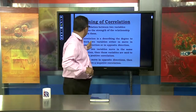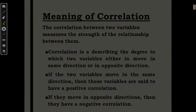Correlation describes the degree to which two variables either move in the same direction or in opposite directions. If two variables move in the same direction, those variables are said to have a positive correlation. For example, when price increases, the quantity supplied by the producer also starts to increase — both move in one direction, so this is known as positive correlation.